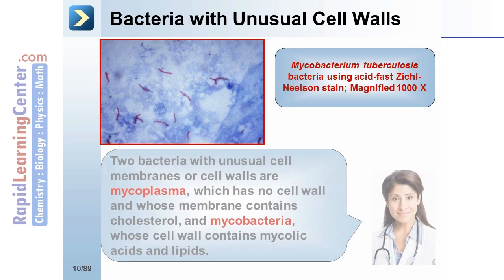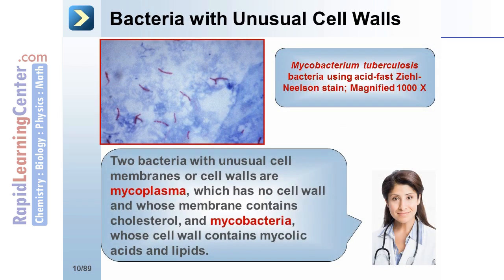Two bacteria with unusual cell membranes or cell walls are mycoplasma, which has no cell wall and whose membrane contains cholesterol, and mycobacteria, whose cell wall contains mycolic acids and lipids.